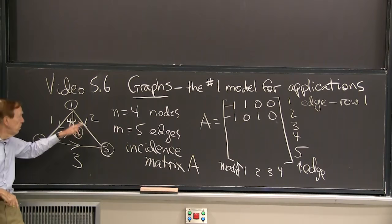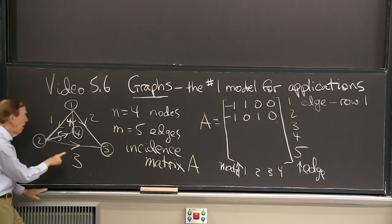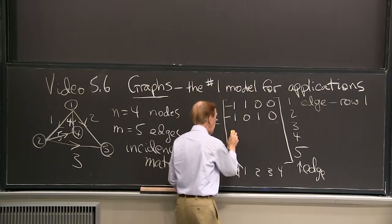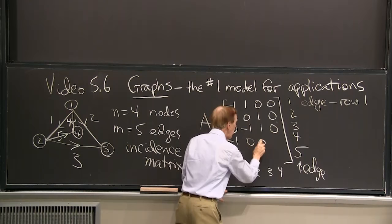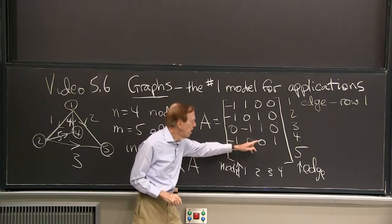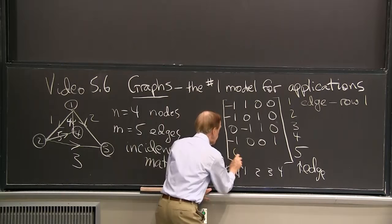Because row two comes from edge two. And it goes from one to three. Edge three will give me row three from two to three. So edge three giving me row three, two to three. Edge four went from one to four. So minus one, nothing, nothing, one. That tells me that edge four is going from node one to node four. And finally, from node two to node four is the final row.